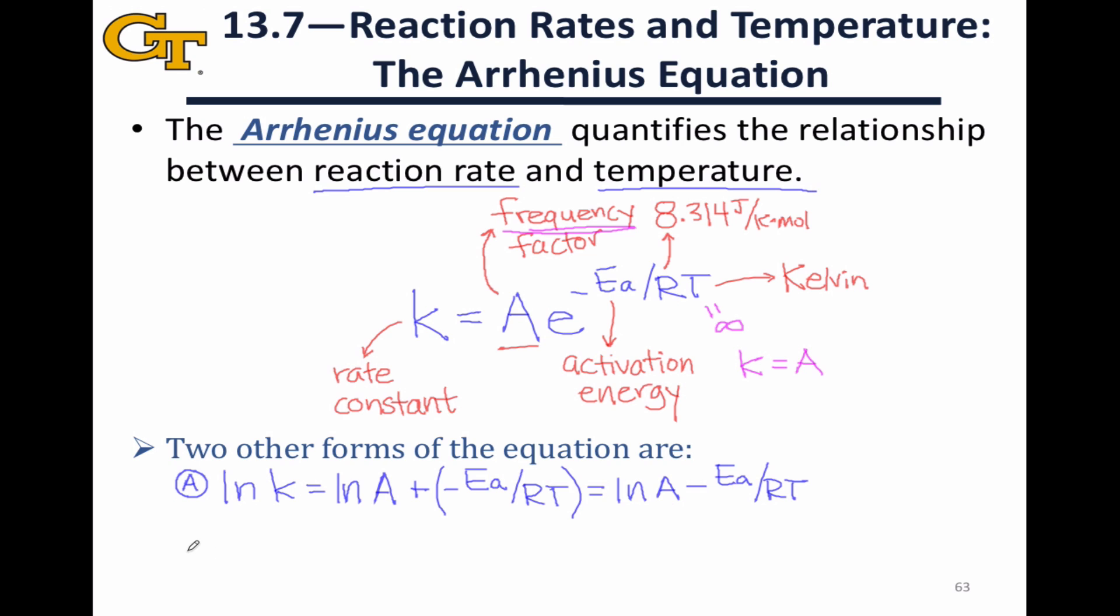We get a second version of this equation if we imagine two points in temperature rate constant space, one temperature with one rate constant, and another temperature with another rate constant. Let's label the first situation state one and the second situation state two. So we have K1 and T1 and K2 and T2.